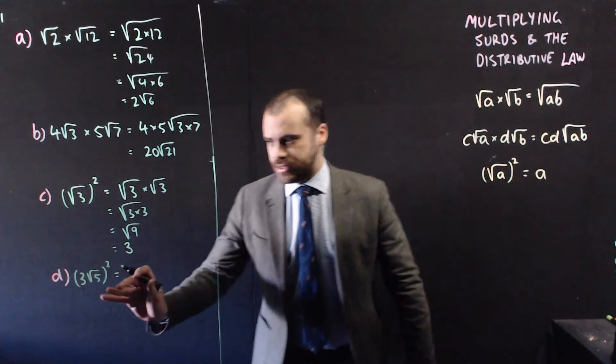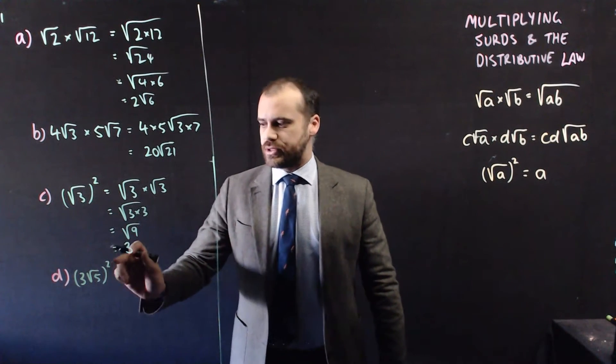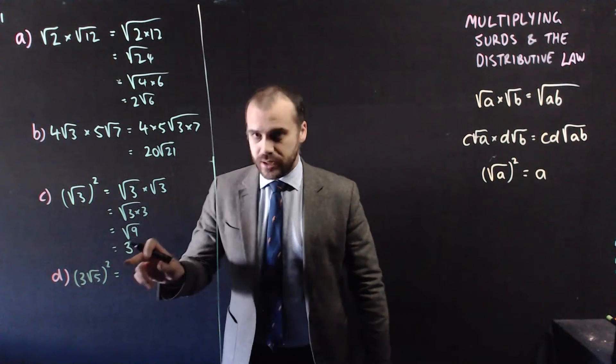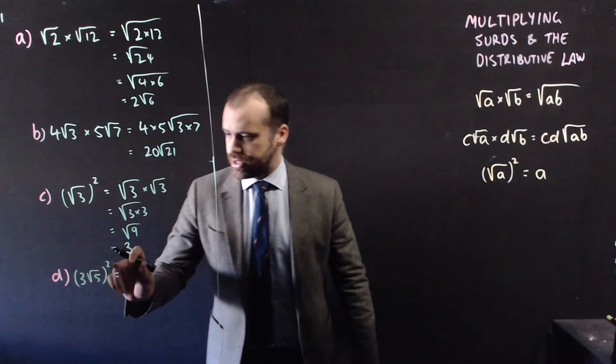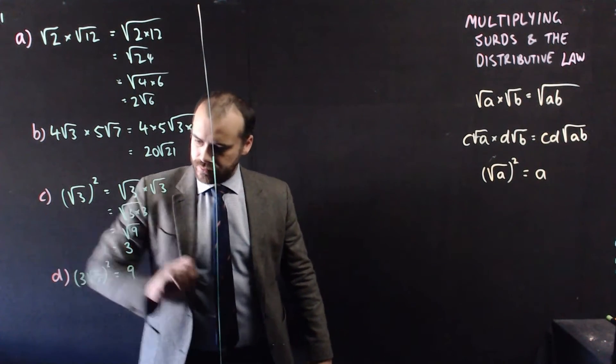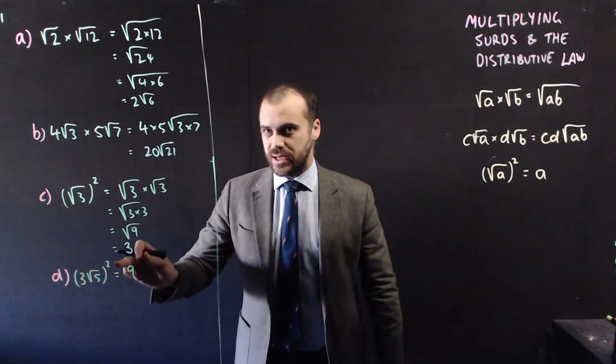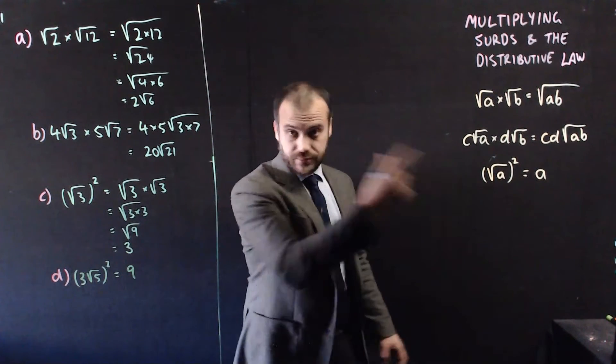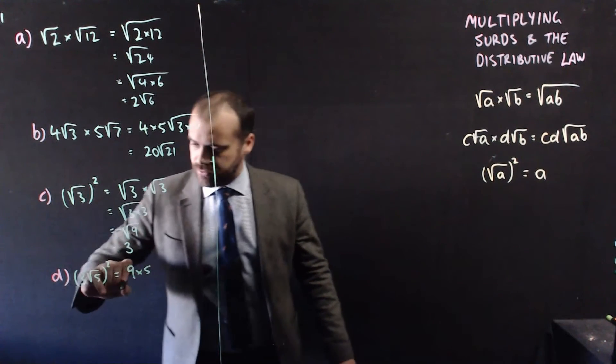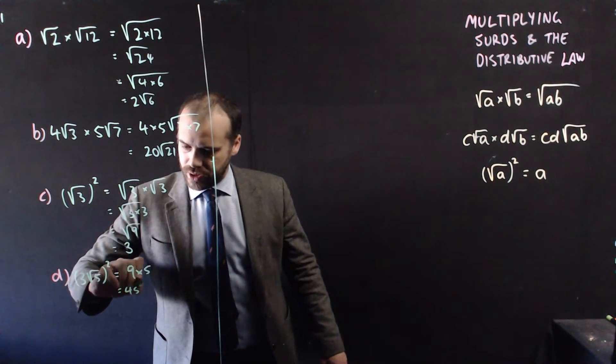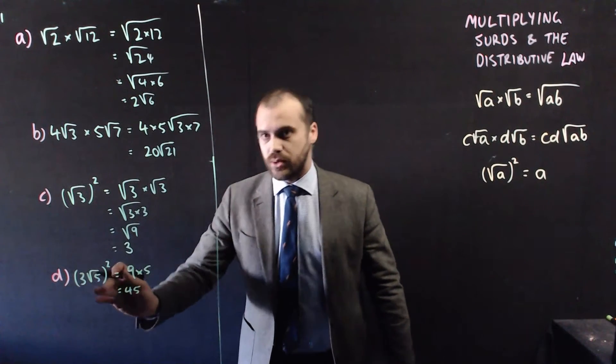Done. A bit similar to the previous example, 3 root 5 squared. Now here, we're squaring this number, and we're squaring this number. So 3 squared is 9, and root 5 squared is 5. So we get 9 times 5, which is 45. Square that, square that, done.